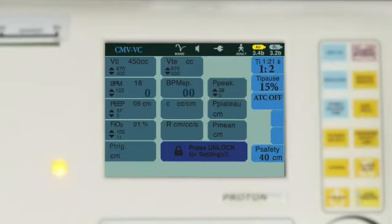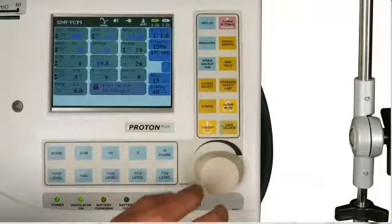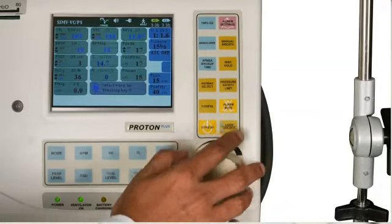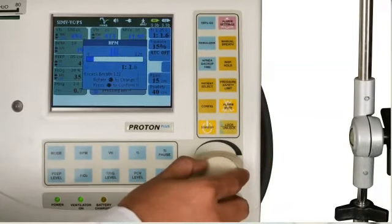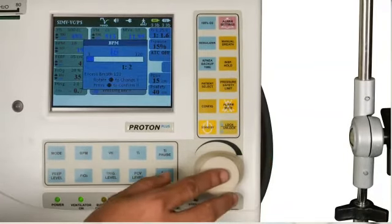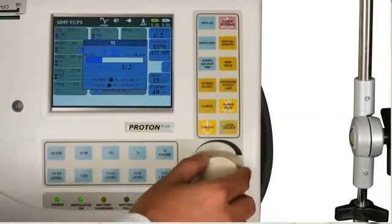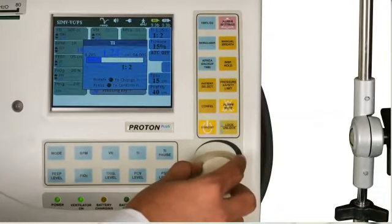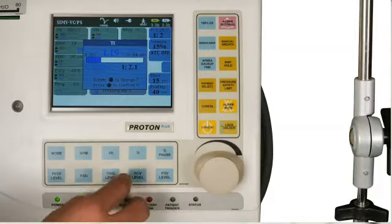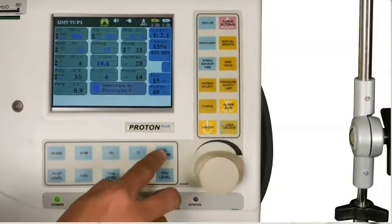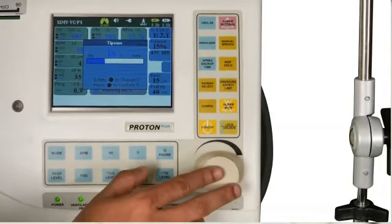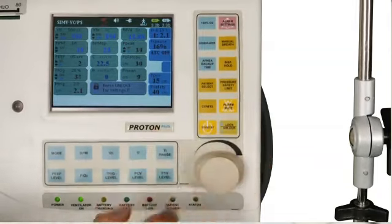There is also a provision to change the mode or parameter while administering the patient on ventilator. It is very simple - just press lock unlock key and you can change the setting by using shortcut keys as per your requirement. This mechanism minimizes errors and enhances accuracy. The shortcut keys also allow you to change the parameter. The operating system is very user friendly.